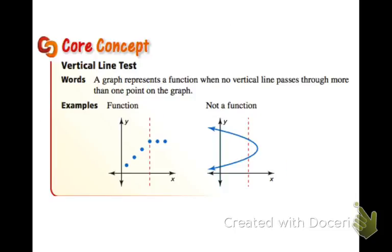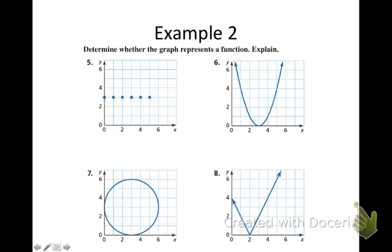This brings us to another core concept, which is the vertical line test. A graph represents a function when no vertical line passes through more than one point of the graph. For an example of a function, when you draw the vertical dotted line, you can see it is only going through one distinct point at every point along the way. For the non-function example, you can see that the vertical line crosses over two points in the graph — therefore it is not a function.